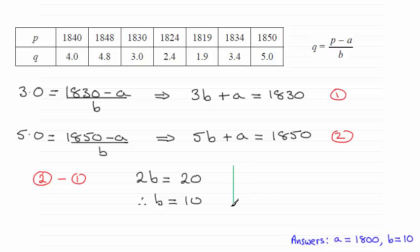Now all I need to do to figure out what a is, is substitute that value for b into one of our equations. I'm going to substitute it into equation 1. If you do that then you've got 3 times b, 3 times 10 which is 30 plus a equals 1830. Take away 30 from both sides and you end up with a being 1800.